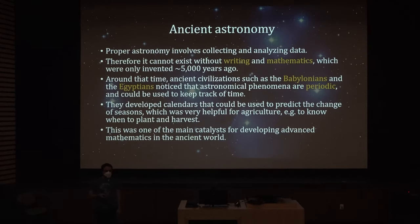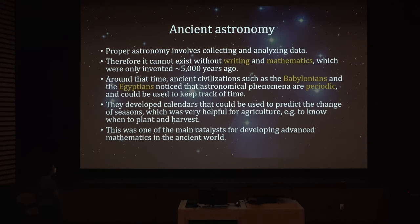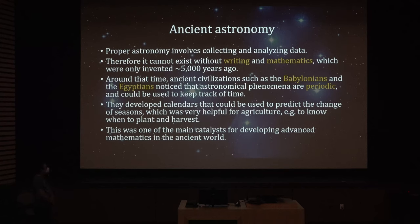Proper astronomy involves collecting and analyzing data. Therefore it cannot exist without writing and mathematics, which were only invented about 5,000 years ago. Around that time, ancient civilizations such as the Babylonians and Egyptians noticed that astronomical phenomena are periodic and could be used to keep track of time. They developed calendars to predict the change of seasons, which was very helpful for agriculture — to know when to plant and when to harvest. This was one of the main catalysts for developing advanced mathematics in the ancient world.